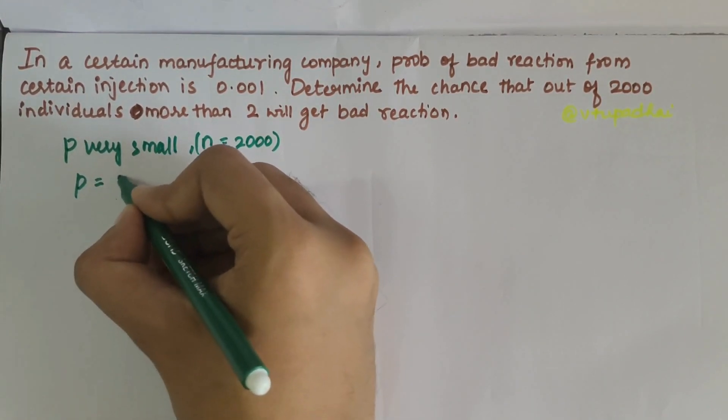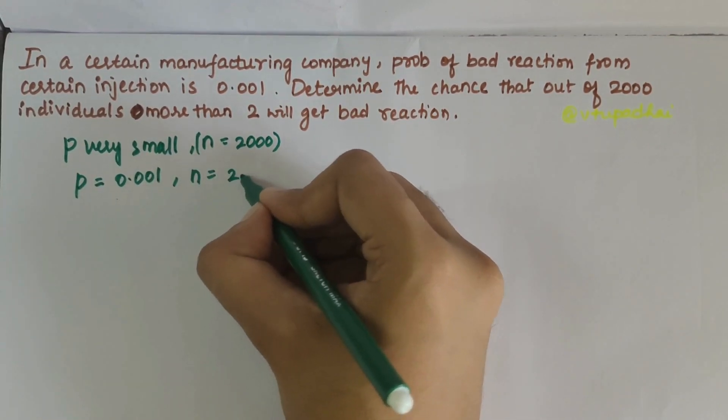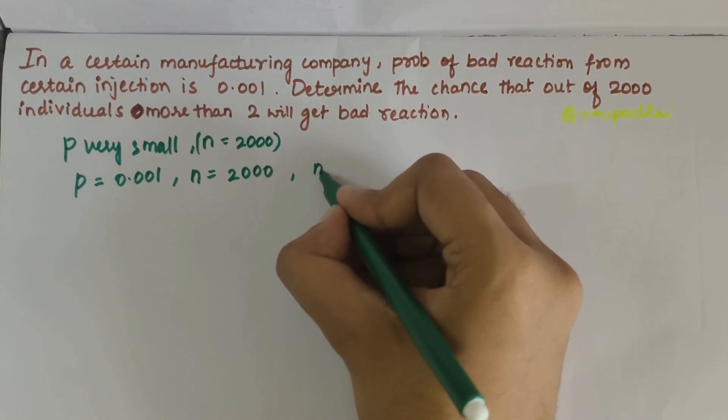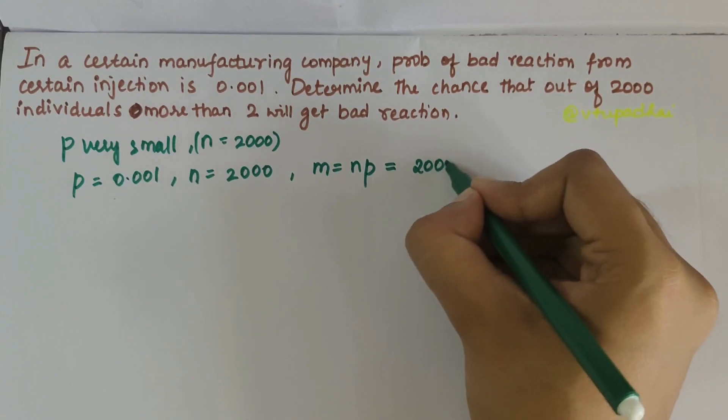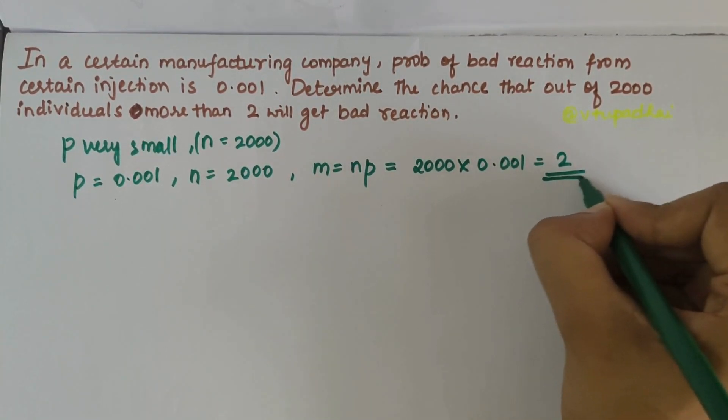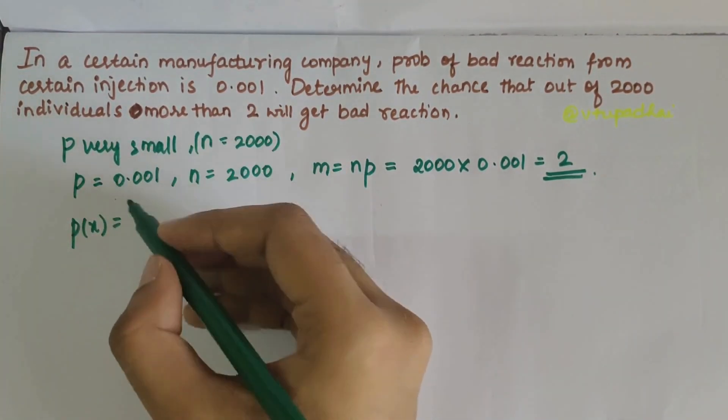First, we write the p value as 0.001 and n as 2000. Next, we calculate m = np = 2000 × 0.001 = 2.